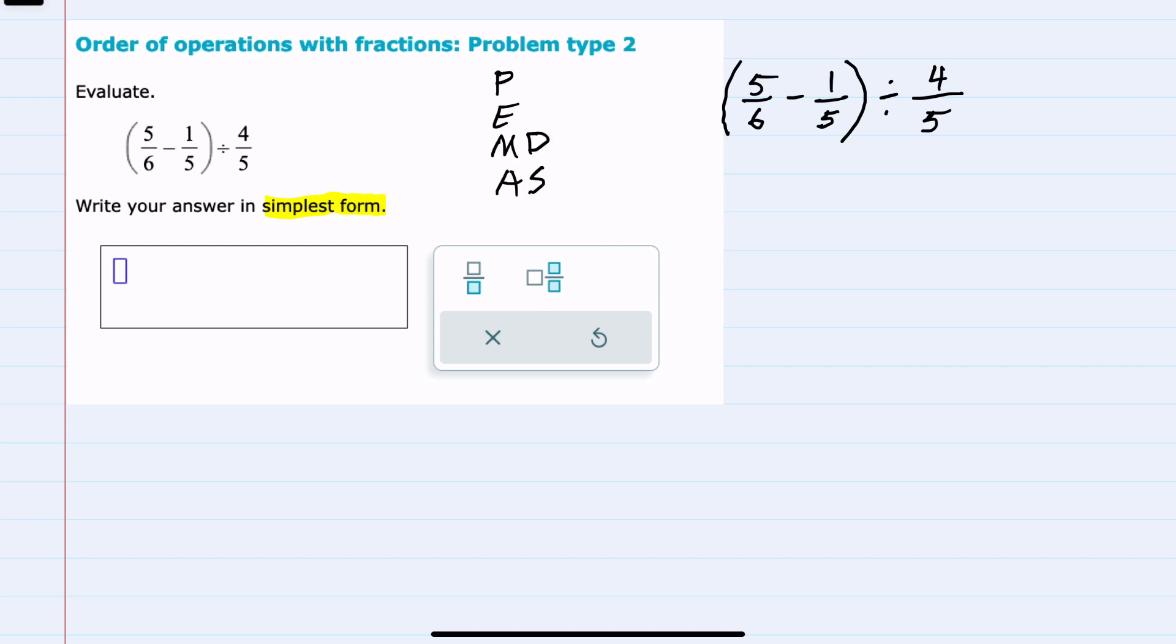I'll recall that order of operations always has us starting by evaluating what's inside the parentheses, so we'll start by doing this part: 5/6 minus 1/5. Since we're doing subtraction here, I do need to get a common denominator between these two fractions, and the lowest common multiple of 6 and 5 is 30.